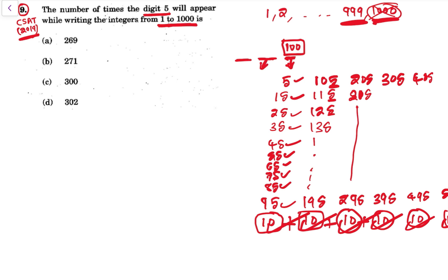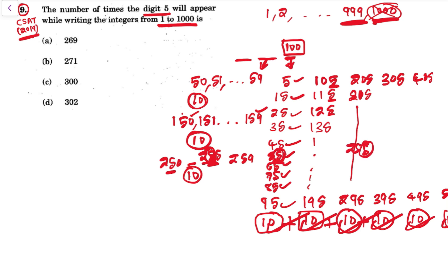Now in tens place, see 50, 51 so on till 59. So 50 to 59, there are 10 numbers. So 10 times 5 occurs. Then tens place, 150 to 159, so there are 10 numbers. So 10 times 5 occurs. Now 255 has 2 fives, but in tens place we are only dealing with tens place.